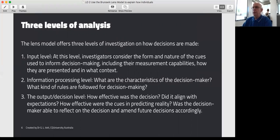It provides three levels of analysis. The first level is the input level, where we consider what sources of information do we need to make the decision and what form should that information come in. Then we look at the information processing level: what are the characteristics of that decision maker and what kind of rules does that decision maker use? Number three is the output or the decision: how effective was it? Eventually you test whether or not that decision was the right decision, whether you've got the outcome that you wanted. Did the outcome align with your expectations? How effective were the cues in predicting reality?